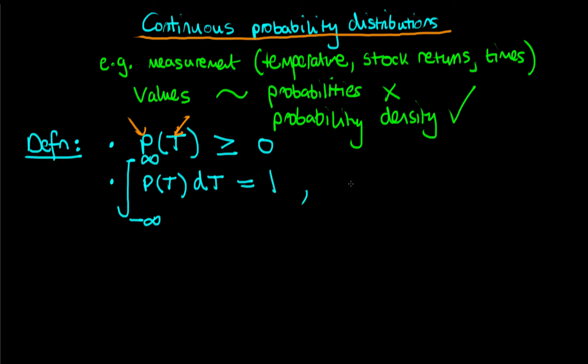Note that I've used minus infinity and plus infinity because those are the limits of a real number. But in practice you may be dealing with variables which are bounded. For example, the weight of an individual must be non-negative, which would mean we'd replace the minus infinity by zero.